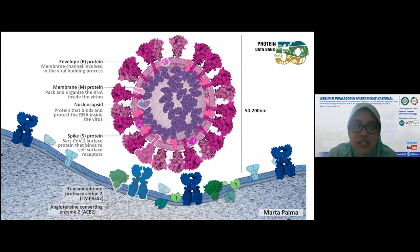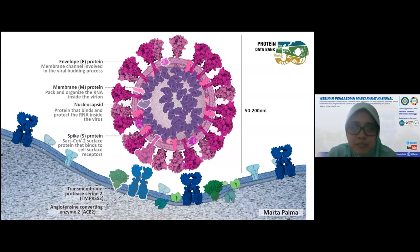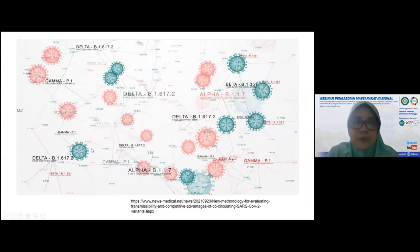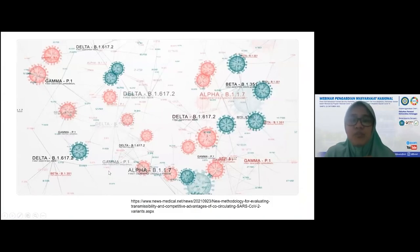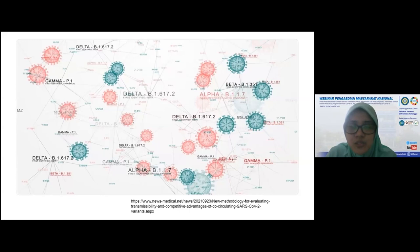Dari sini dia akan dibantu oleh TMPRSS2 untuk masuk ke dalam tubuh manusia dan bereplikasi. Selain dari spike ini, ada beberapa gen yang berfungsi sebagai tempat si virus bereplikasi atau memperbanyak diri, yaitu nukleokapsid, protein membran, dan envelope. Virus yang saat ini beredar di dunia, untuk SARS-CoV-2 ada konsensus dari dunia bahwa ada dua tipe yaitu VOC atau Variant of Concern dan Variant of Interest atau VOI.